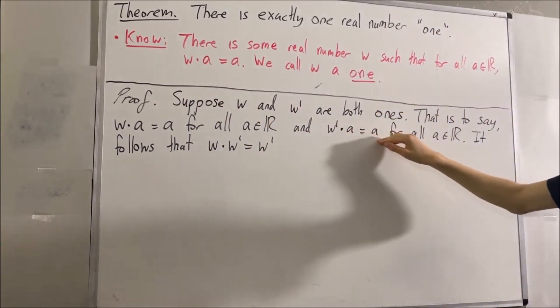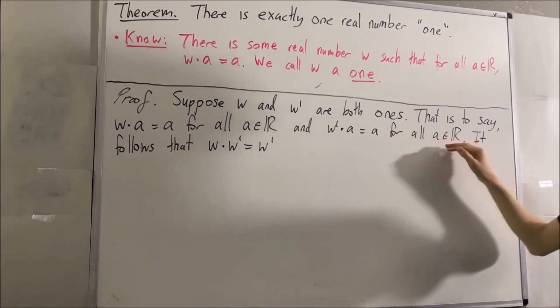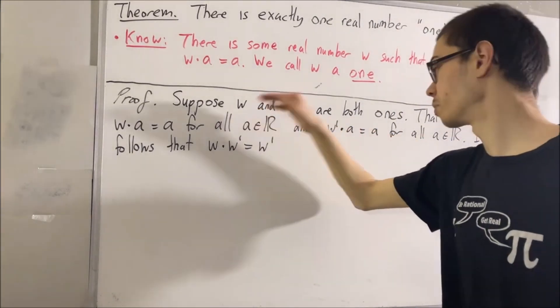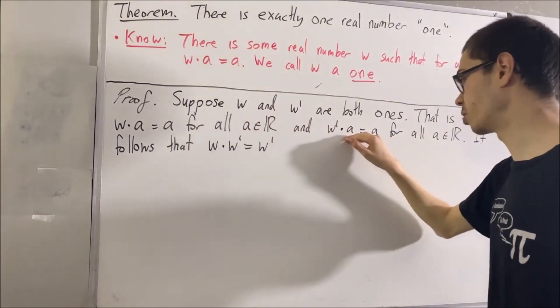Also, this equation works for every real number, so it must work for w. So we have that w prime times w is equal to w.